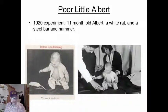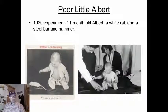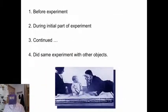Poor little Albert in 1920. An experiment. Eleven-month-old Albert. A white rat and a steel bar and hammer. Before the experiment, Albert, this little child, was presented with a rat. He had no fear in reaching out and touching it when he saw it.